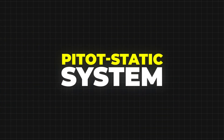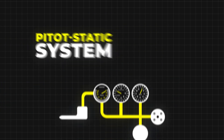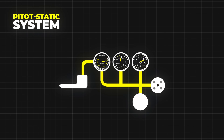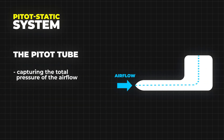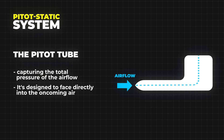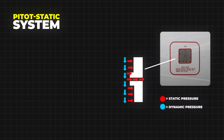Now, let's shift our focus to the pitot-static system, a sophisticated setup designed to measure these pressures and provide crucial data to pilots during flight. The pitot tube is an ingenious device that protrudes into the airstream, capturing the total pressure of the airflow. It's designed to face directly into the oncoming air, measuring both static and dynamic pressures.